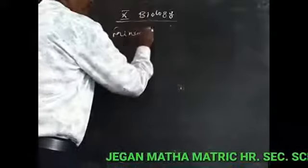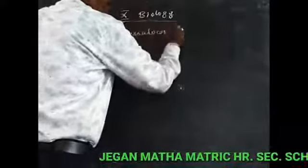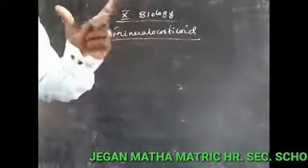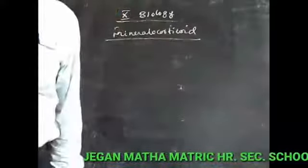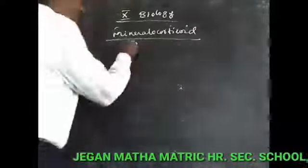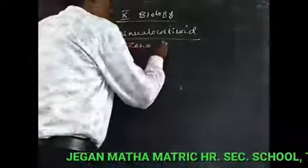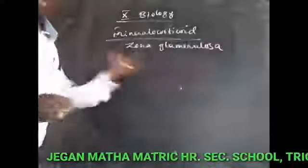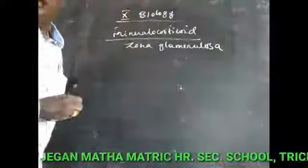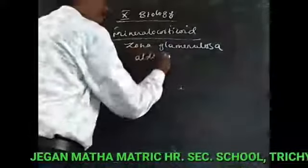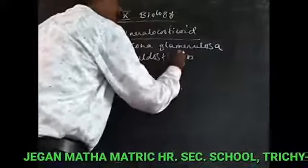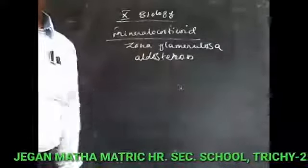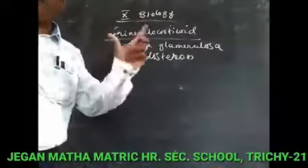The next hormone is called mineralocorticoid. The mineralocorticoid is developed from the zona glomerulosa and is also called aldosterone.